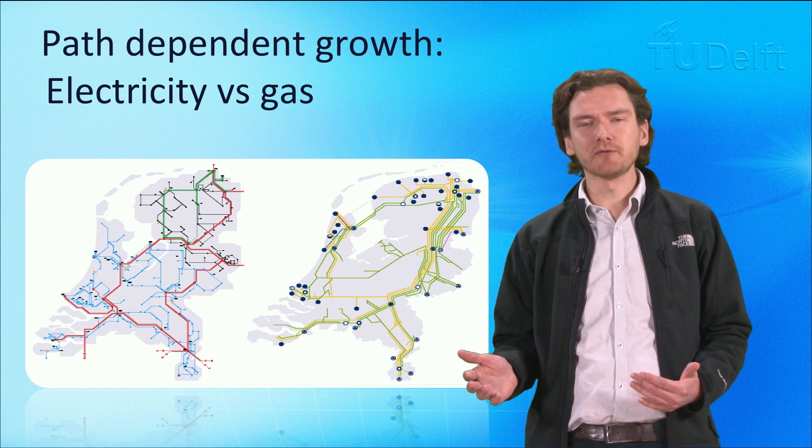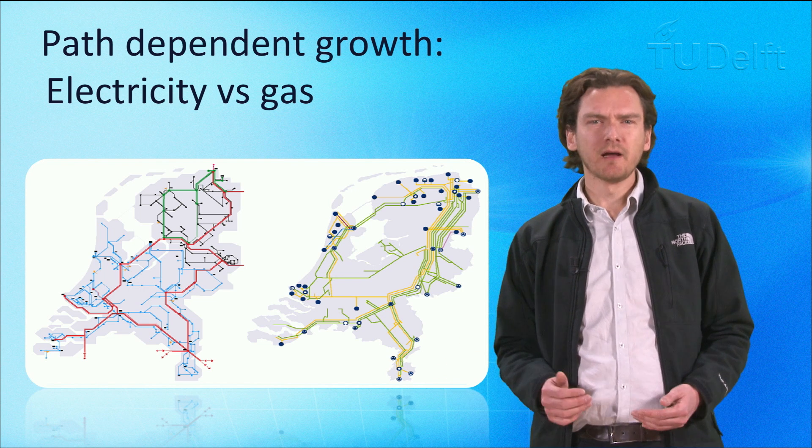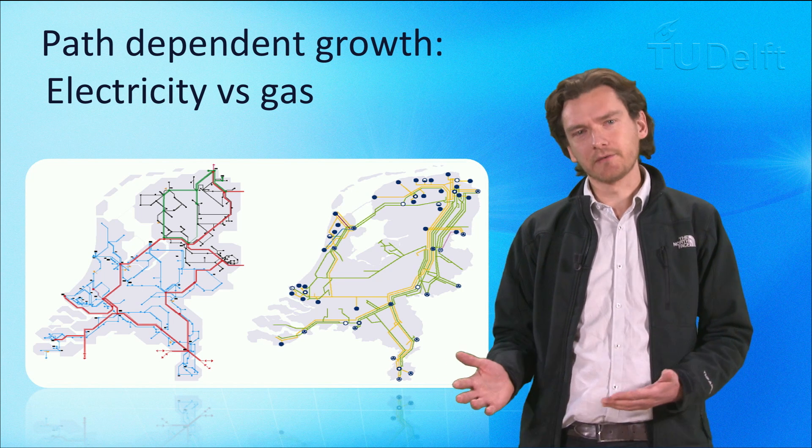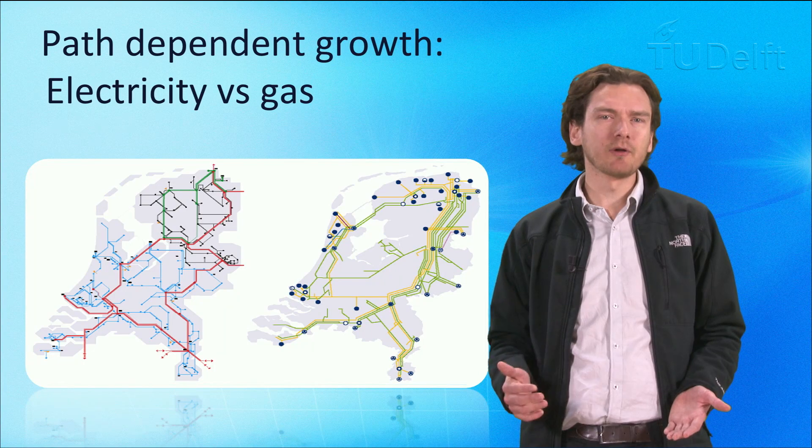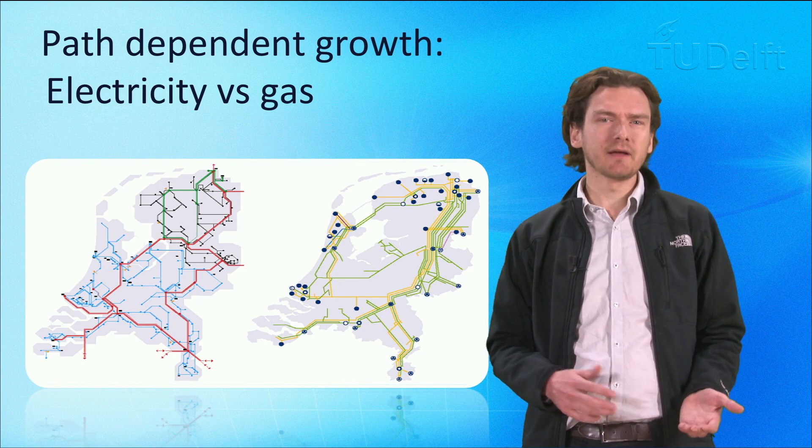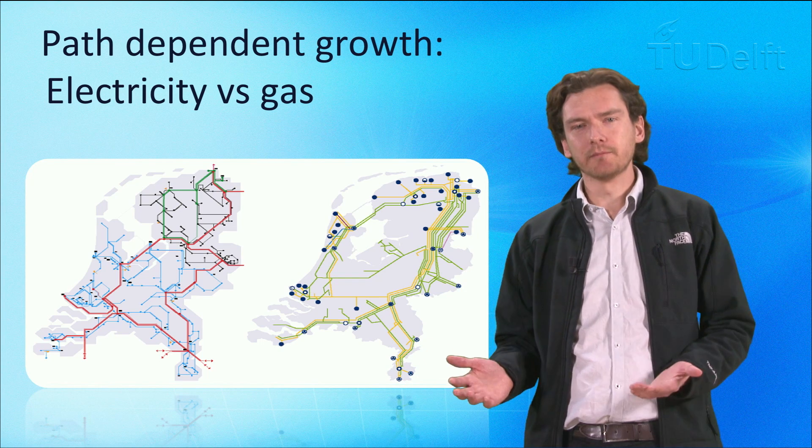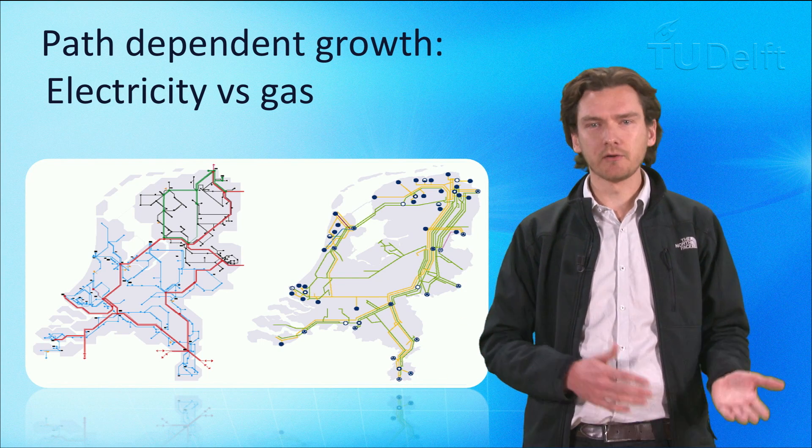For the power grid, this is very much a bottom-up process. The gas grid has evolved much differently instead. Instead of consisting of distributed production centers like with the power grid, the pipelines have mostly been built to take gas from the Groningen field in the Northeast Netherlands, and then transport this to the rest of the country, along across into Germany, to Belgium, and to the UK.